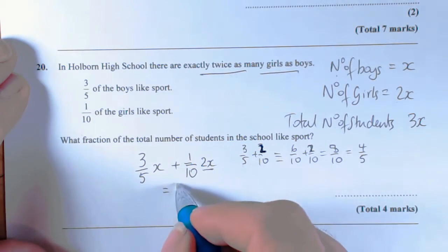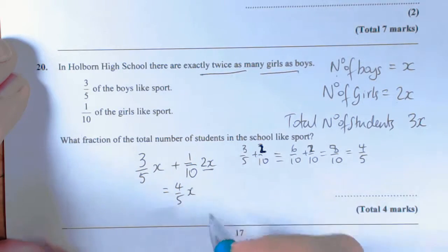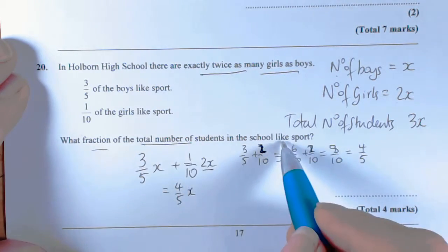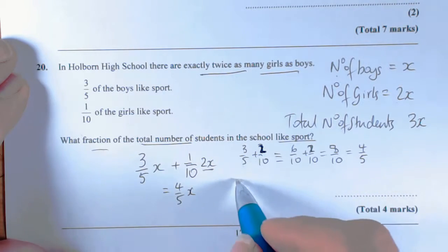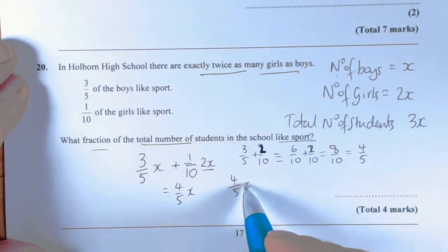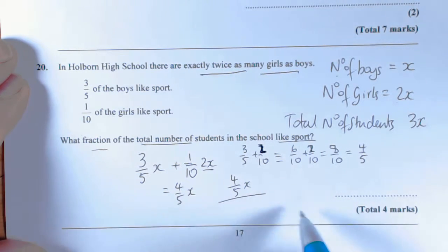But it says what fraction of the total number of students in school like sport. So we then have the situation that 4/5 of the students, the X, like sport. So we've got to then think to ourselves that the total number of students was 3X.